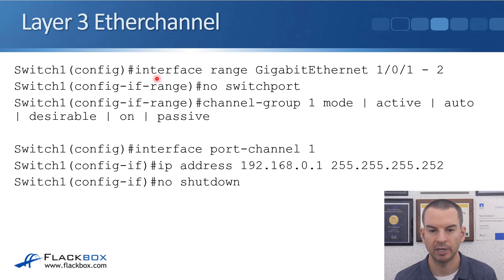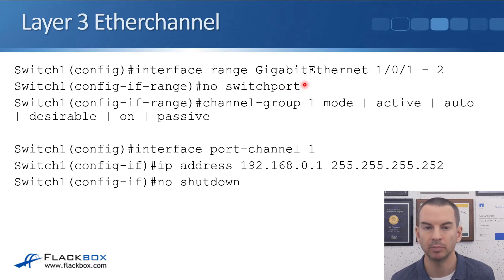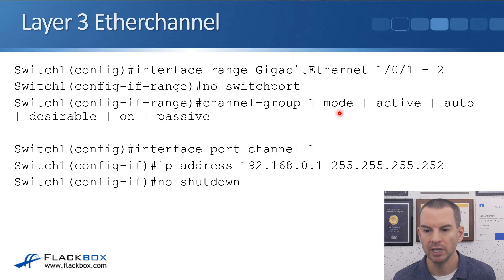At global config I've said 'interface range gigabit ethernet 1/0/1 to 2,' then 'no switchport' to make those layer 3 ports, and then I'm going to configure them as a port channel. So I say 'channel-group 1 mode' and then the same options as we had for layer 2 — it can be active, auto, or desirable.